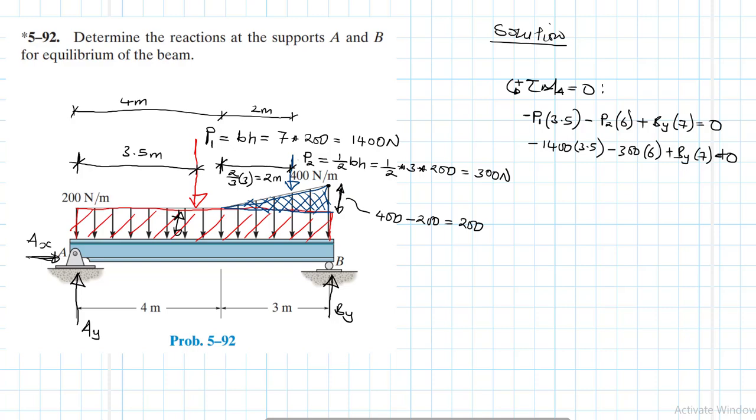So what do we have? We have minus 1400 by 3.5, minus 300 by 6, and then divided by 7. What do we have? We have BY is equal to 957.14.